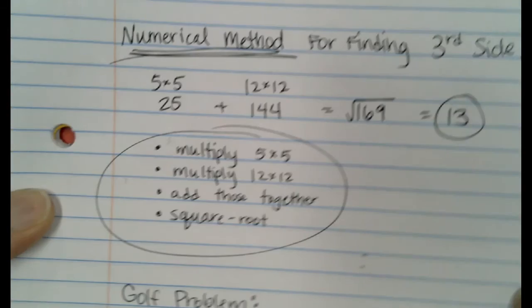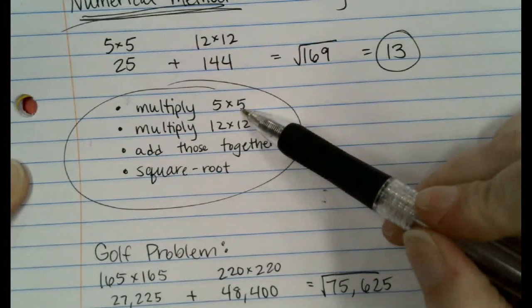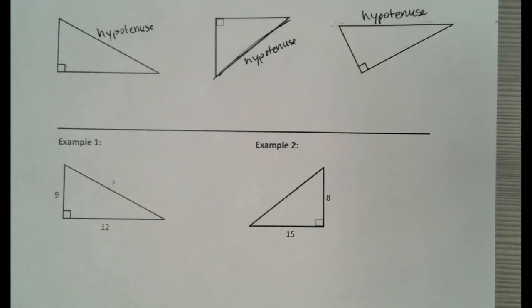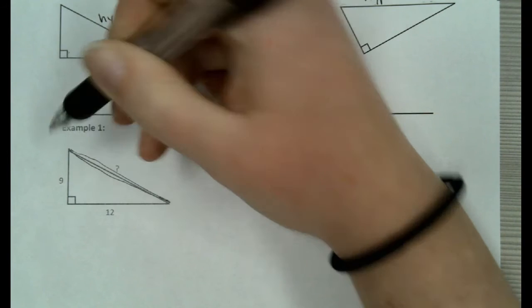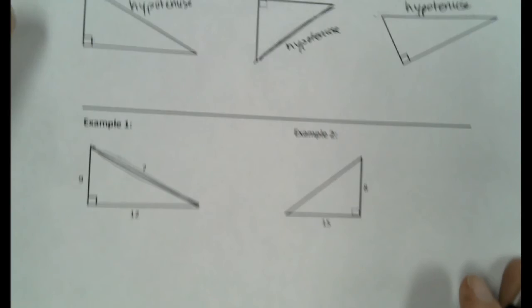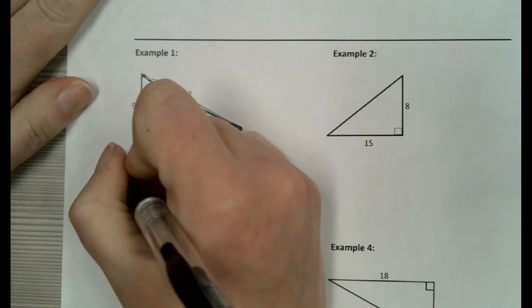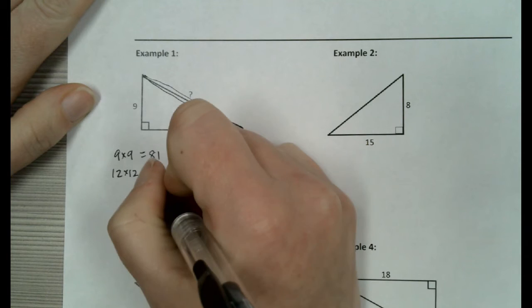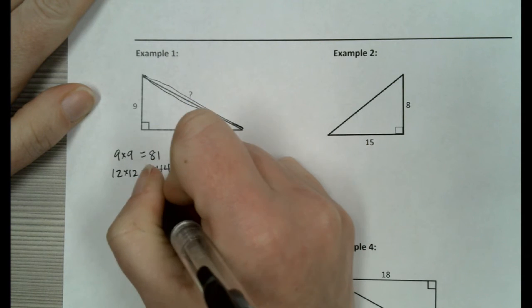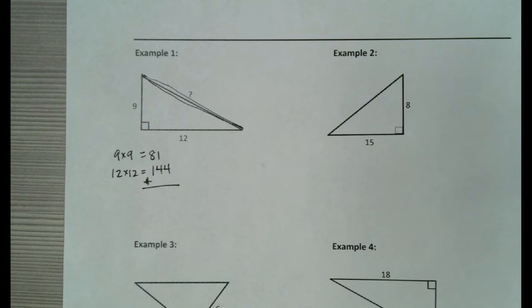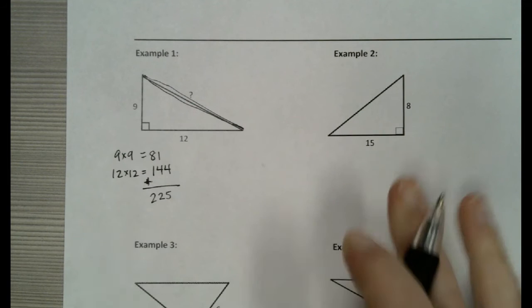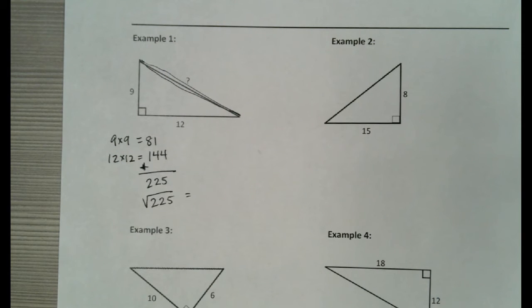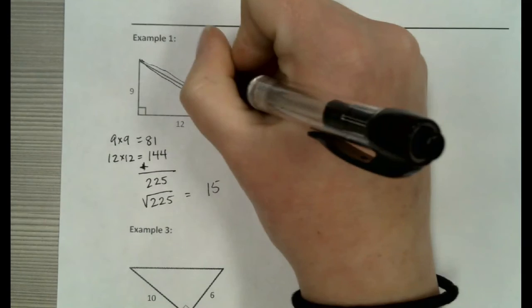It's the same steps over and over again — multiply a number by itself, multiply the other number by itself, add those together, square root. Let's try a couple examples. This side right here would be my hypotenuse — that's the side we want to find. We're going to do 9 times 9, which is 81, and 12 times 12, which is 144. Add those together: 81 plus 144 is 225. Square root of 225 gives us 15. So this side would be 15.